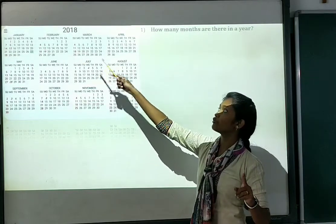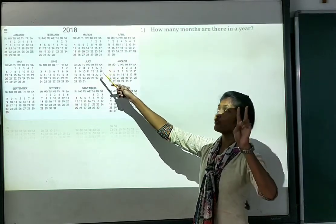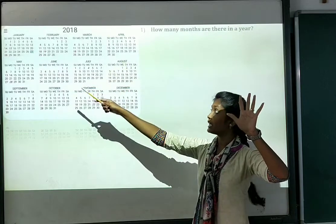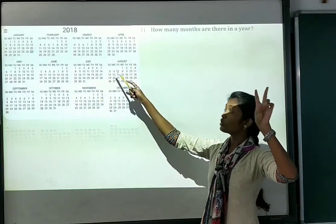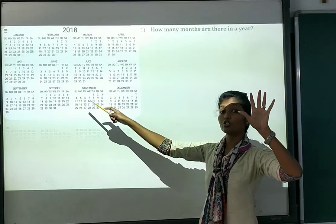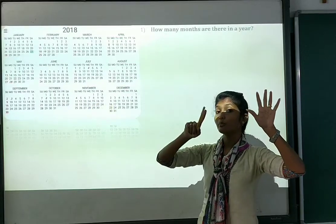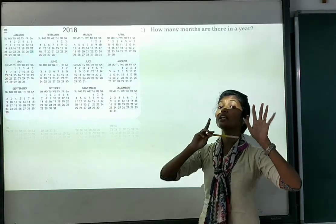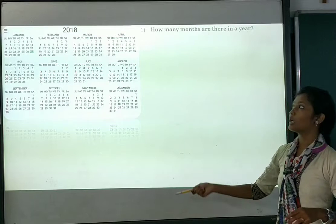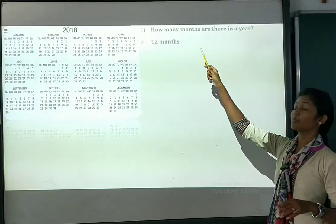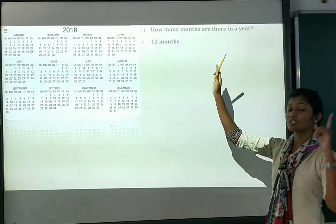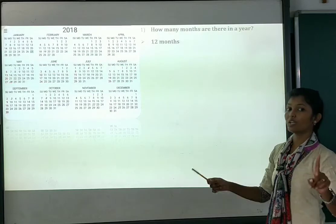Let's count: January, February, March, April, May, June, July, August, September, October, November and December — 12 months. So the answer is 12 months. You just have to write the answer; you know it.